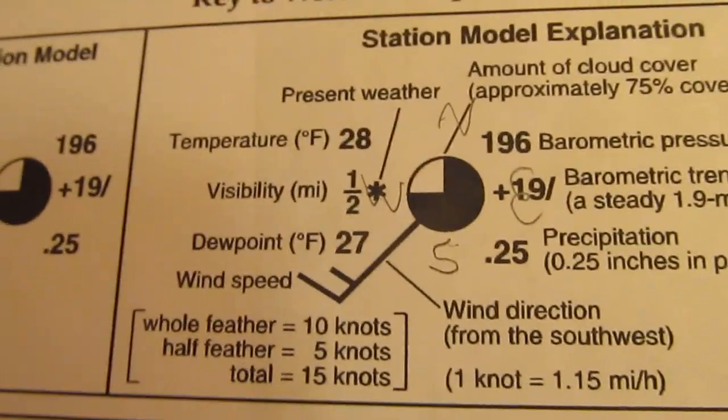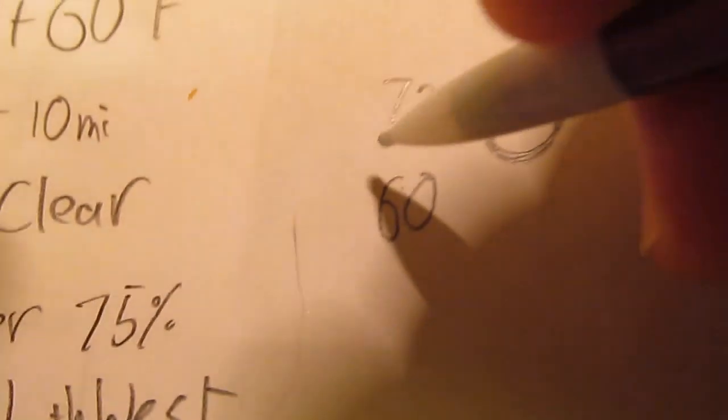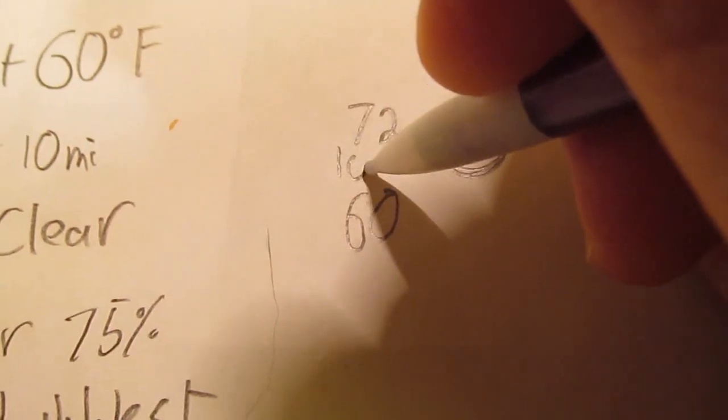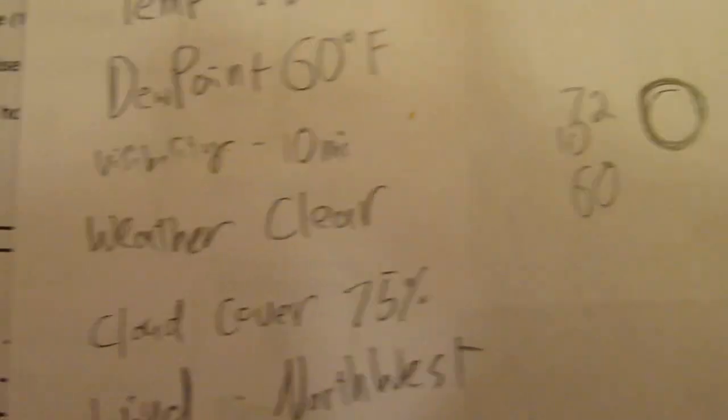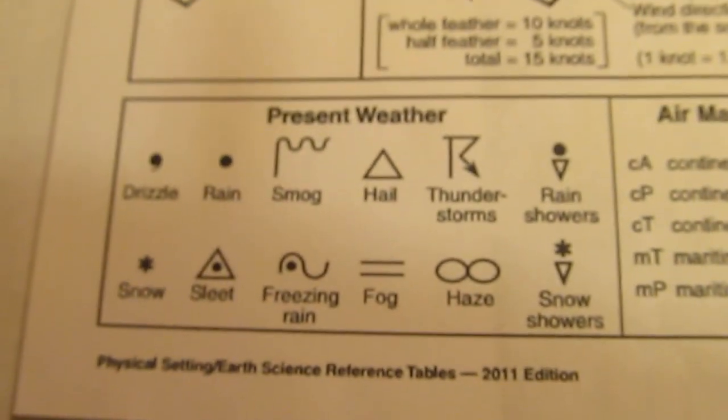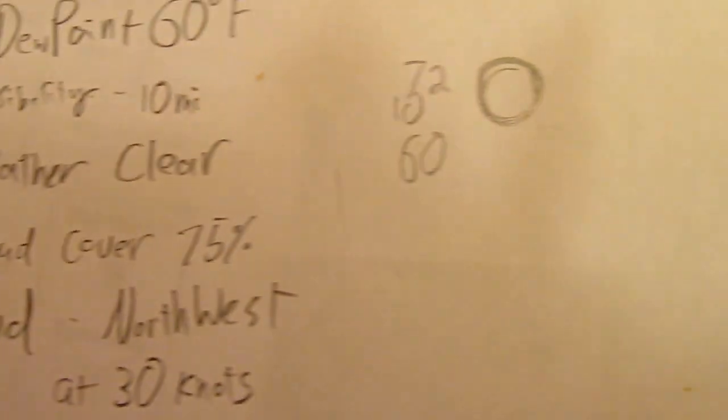Visibility. Visibility goes on the left in the middle. So I'll try to squeeze that in over here. There we go. And of course, current weather is clear. So there is no symbol for clear. So we just leave that blank.